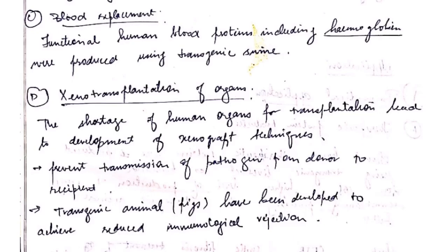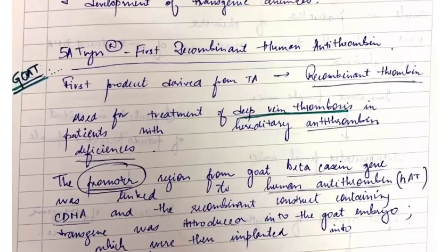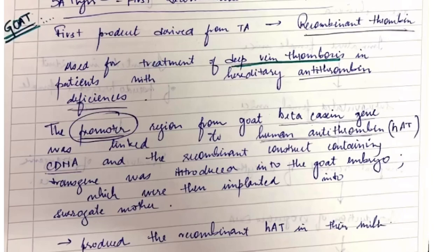Transgenic animals also have applications in agriculture. In wool production, transgenic sheep have been developed to increase wool production by introducing the keratin IGF1 gene. The very first recombinant human antithrombin was introduced in goat and was used for the treatment of deep vein thrombosis in patients with hereditary antithrombin deficiency. The promoter region from goat beta-casein gene was linked to human antithrombin cDNA, and the recombinant construct was introduced into the goat's embryo, which produced the recombinant HAT in the milk.